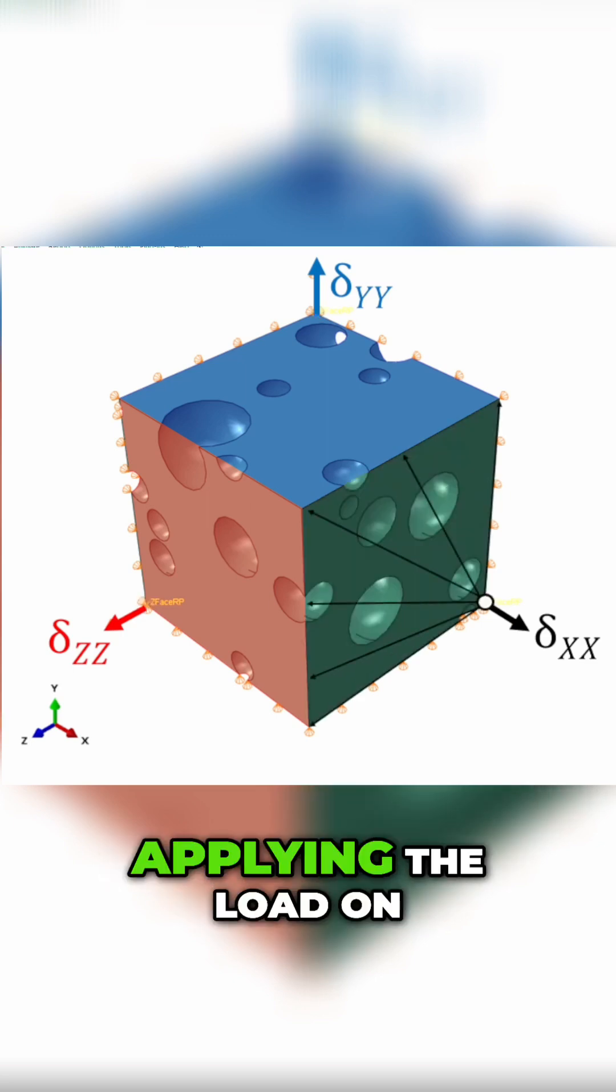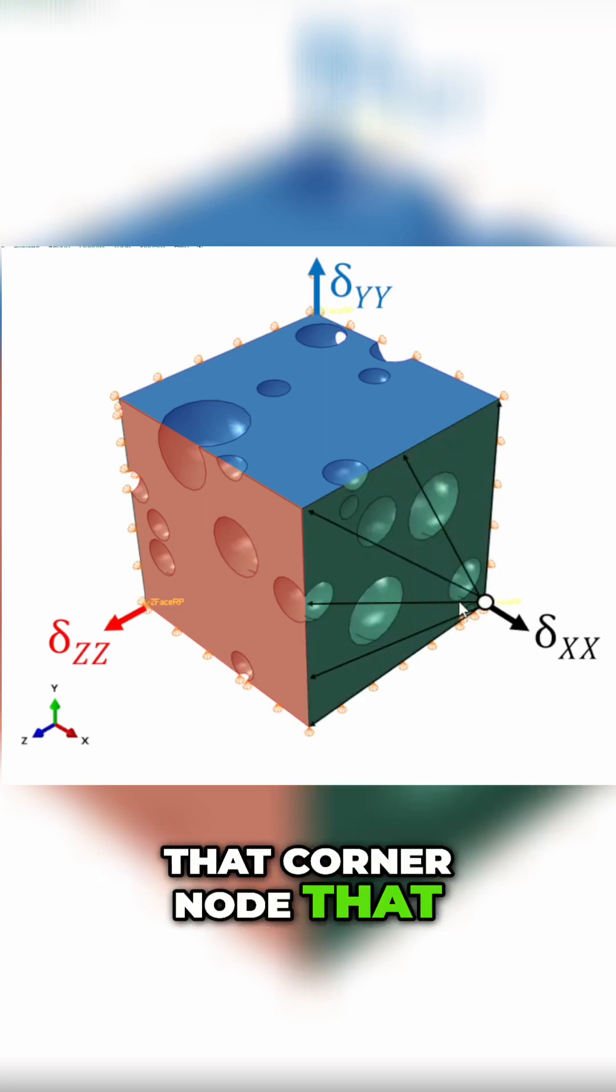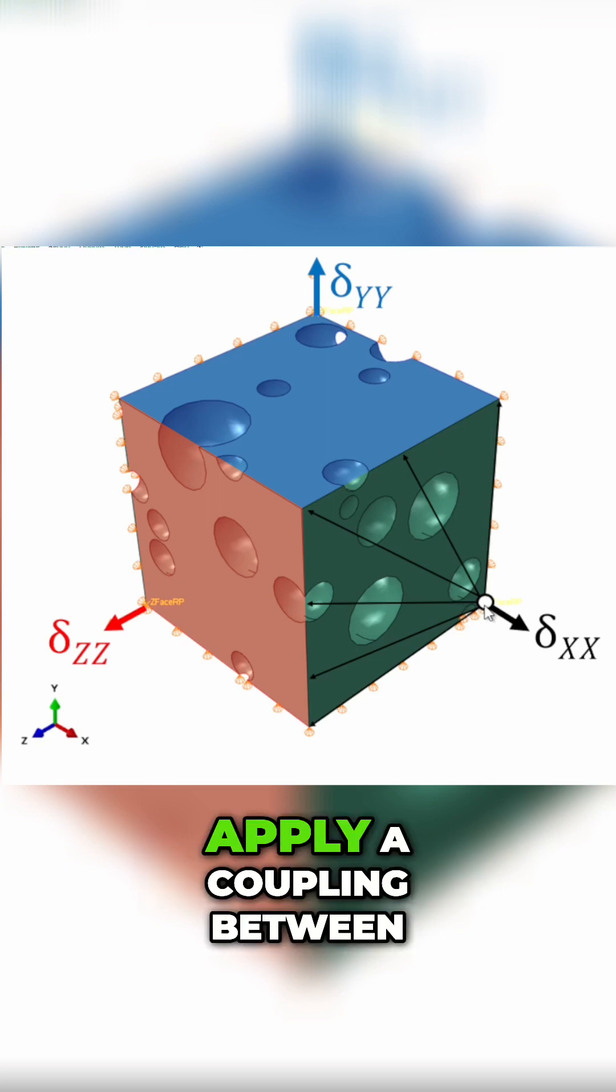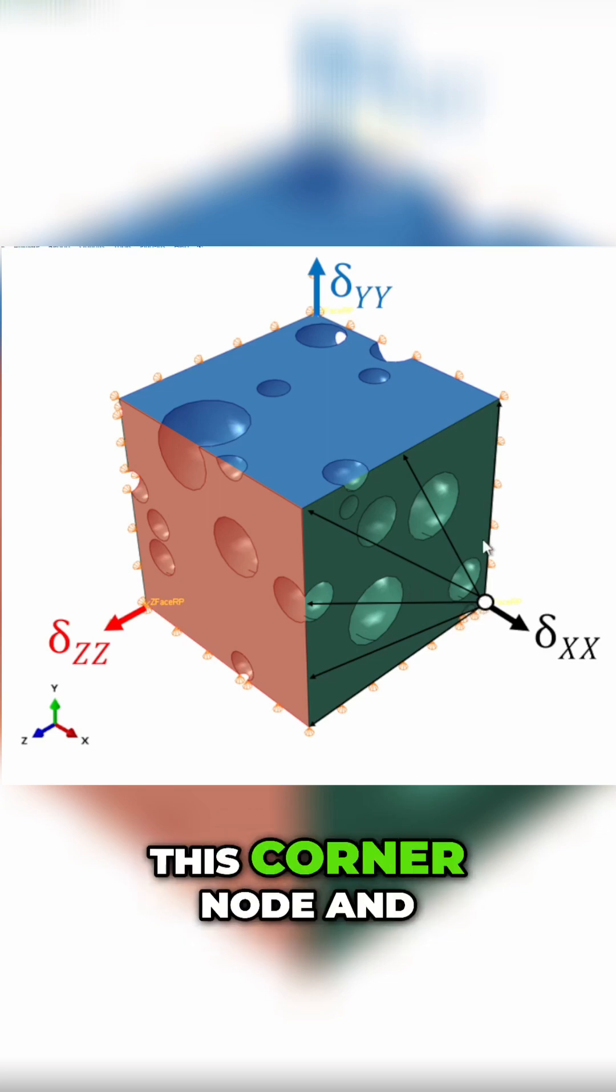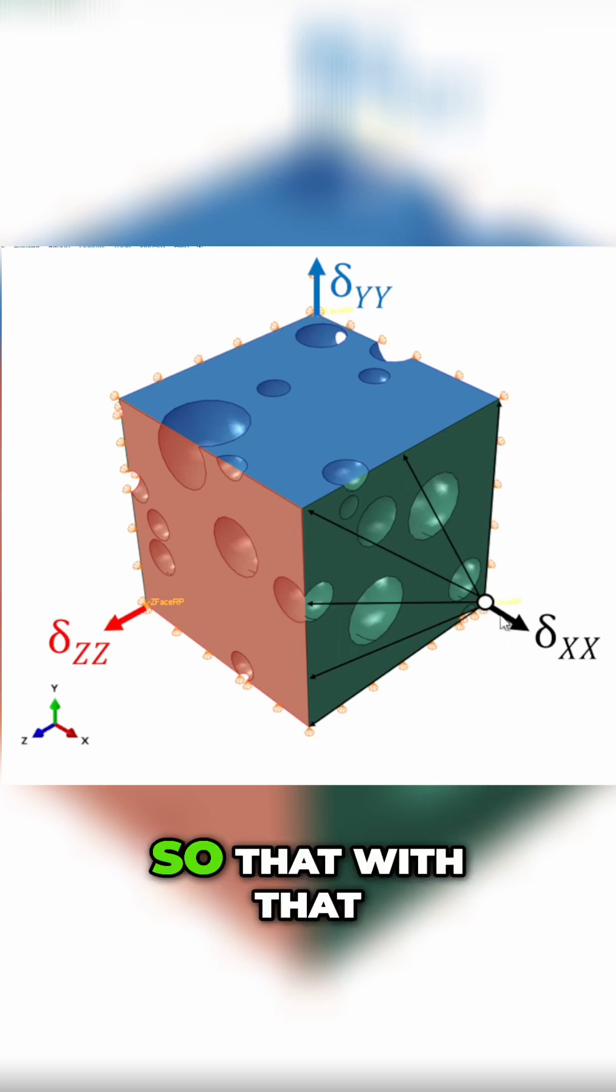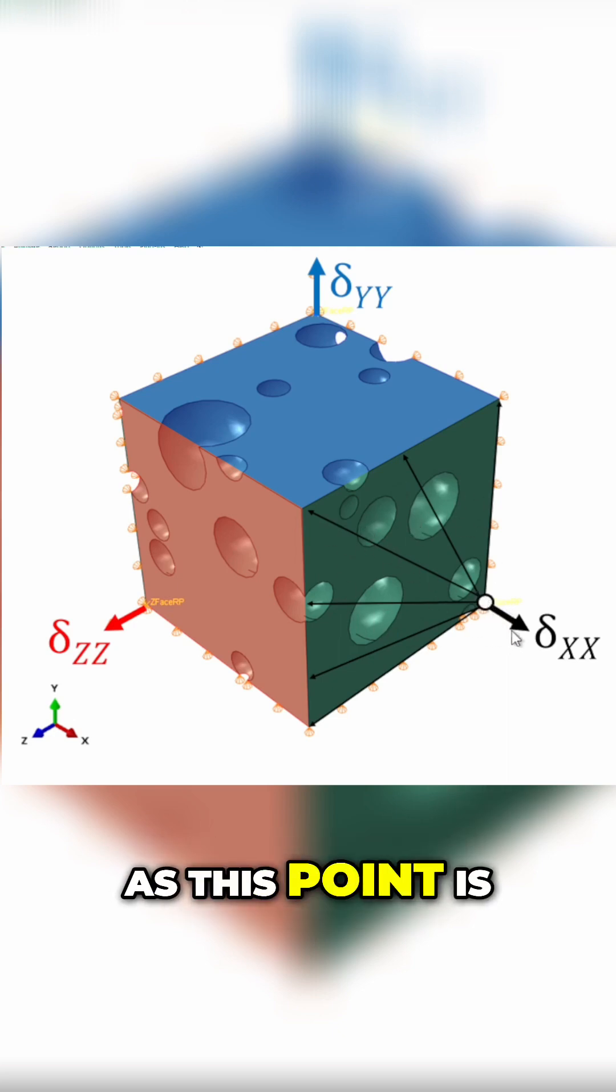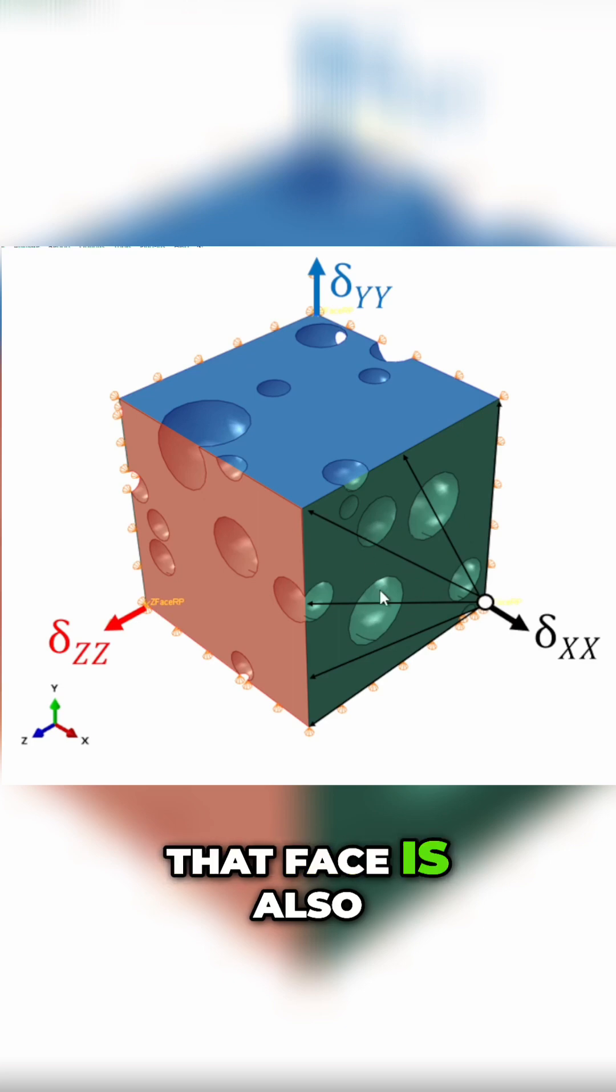If I'm applying the load on that corner node, I need to apply a coupling between this corner node and the whole face, the X face here which I call the X front. With that kinematic coupling, as this point is being pulled, that face is also being pulled along with it.